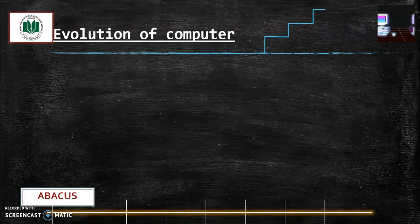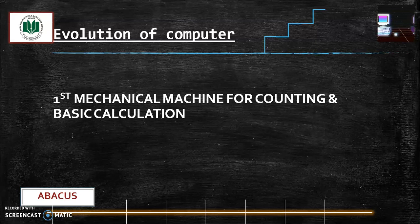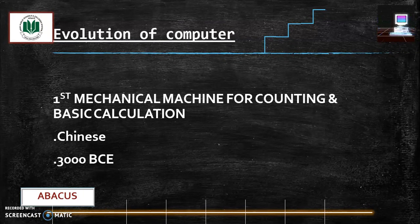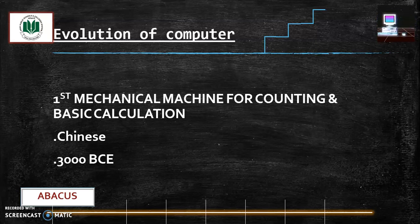Let's start with Abacus. Abacus is the first machine generally used for counting and some basic calculations like addition, subtraction or multiplication. Abacus was invented in 3000 BCE by Chinese. So more than 5000 years ago abacus was invented.